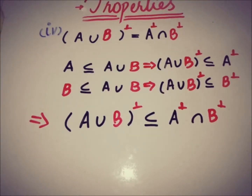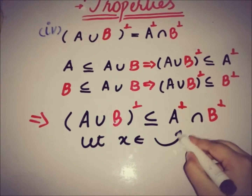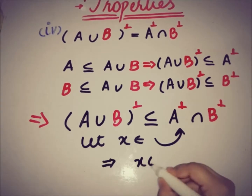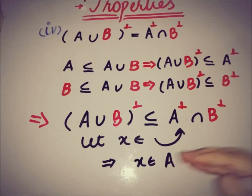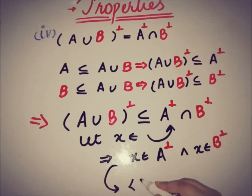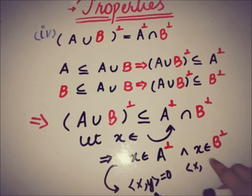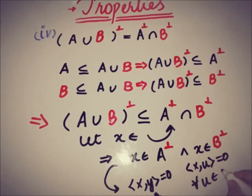Let's take a vector X from A annihilator ∩ B annihilator. This implies that X is a member of A annihilator and also a member of B annihilator. By definition, since X belongs to A annihilator, the inner product of X and Y is 0 for all Y taken from A. And the inner product of X and U is 0 for all U taken from B.